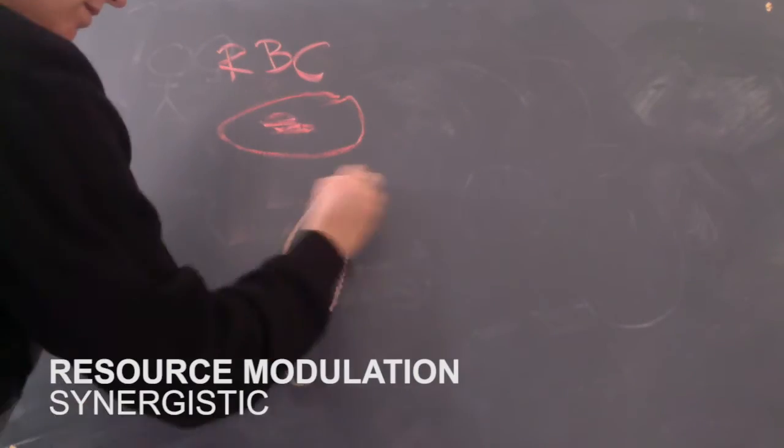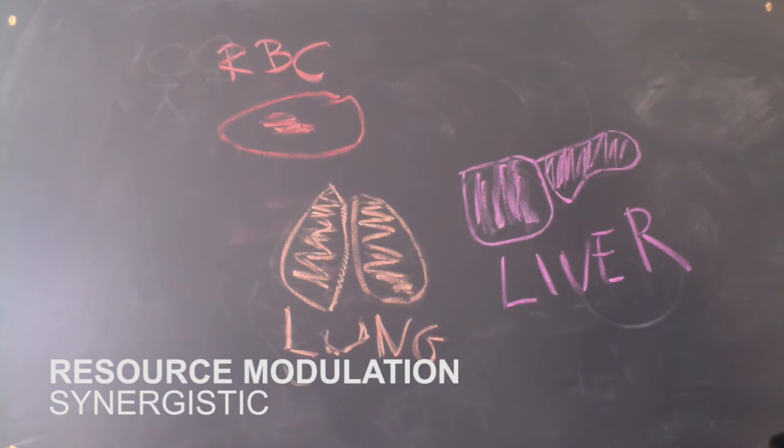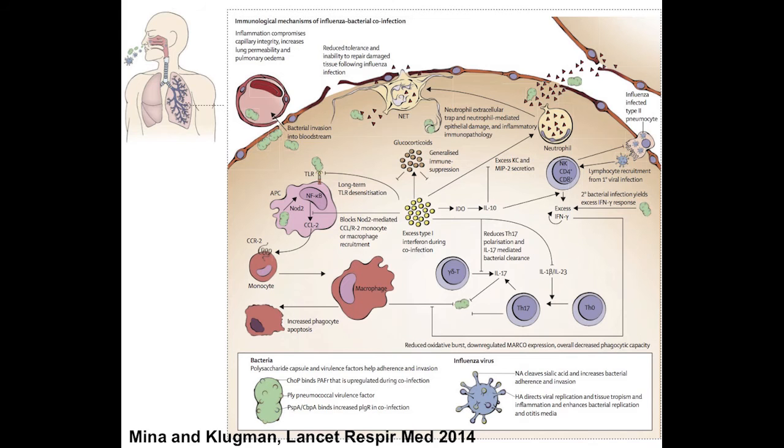Pathogens rely on a wide range of host resources, access to which can be impacted by co-infection. On the synergistic side, cooperative behavior among bacteria can lead to biofilm formation. Also, flu pre-infection can improve the adherence of a later bacterial infection to epithelial cells.